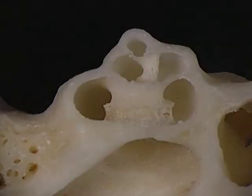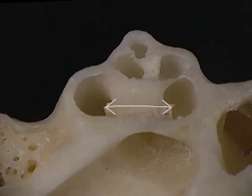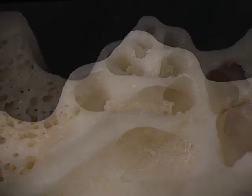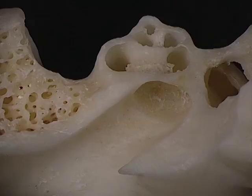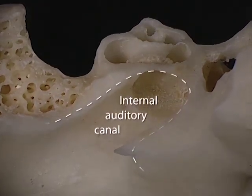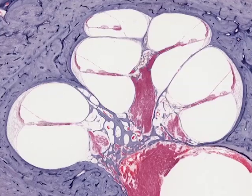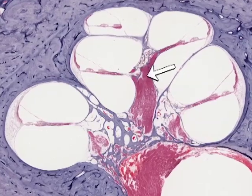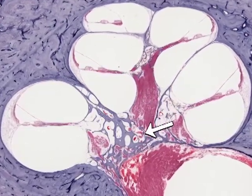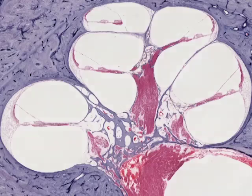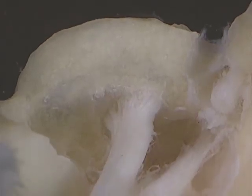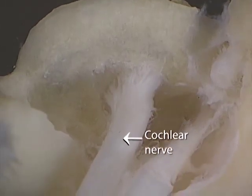The modiolus widens to a broad base, which faces medially into the end of the internal auditory canal. The modiolus is the bony conduit for the nerve fibers going to and from the basilar membrane. The nerve fibers emerge through the base of the modiolus into the internal auditory canal, forming the cochlear nerve.